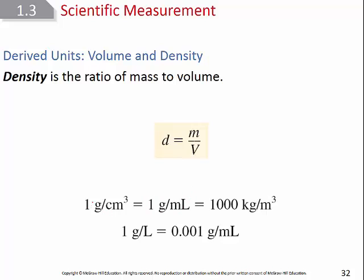Grams per milliliter is the same as grams per centimeter cubed, since milliliters and cubic centimeters are the same. Grams per cubic centimeter is used for solids, since solids are typically measured by length, width, and height. Gases are far less dense than solids or liquids, so for gases we typically use grams per liter.